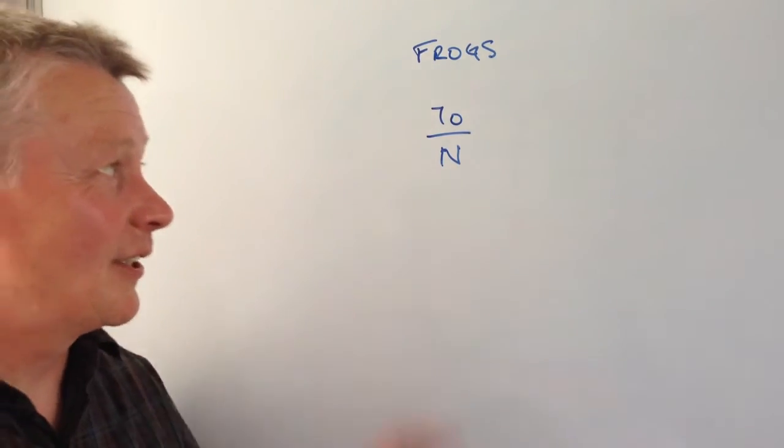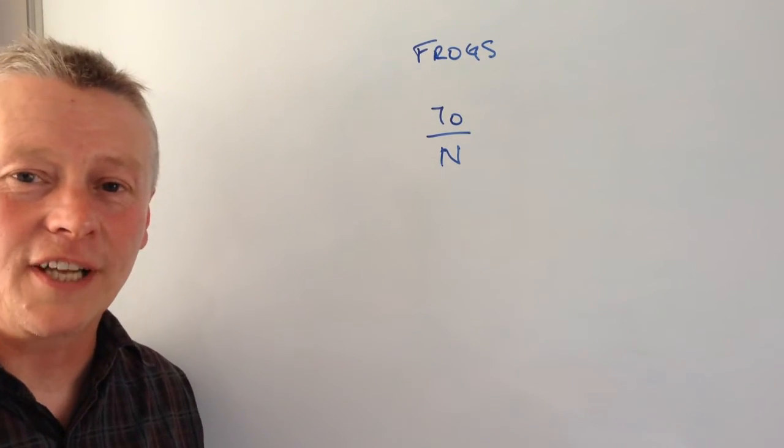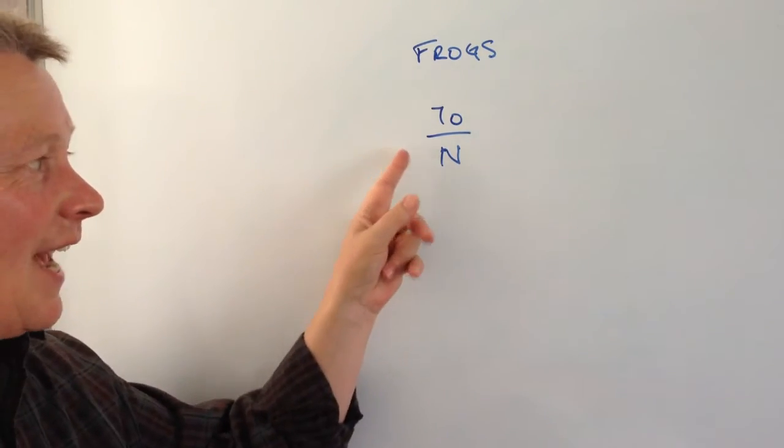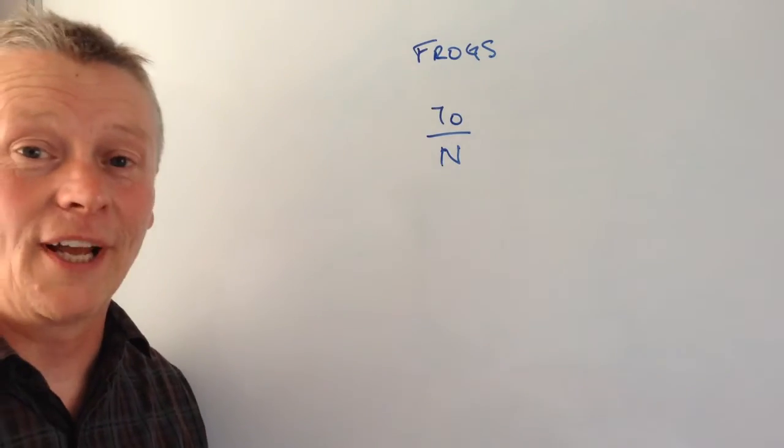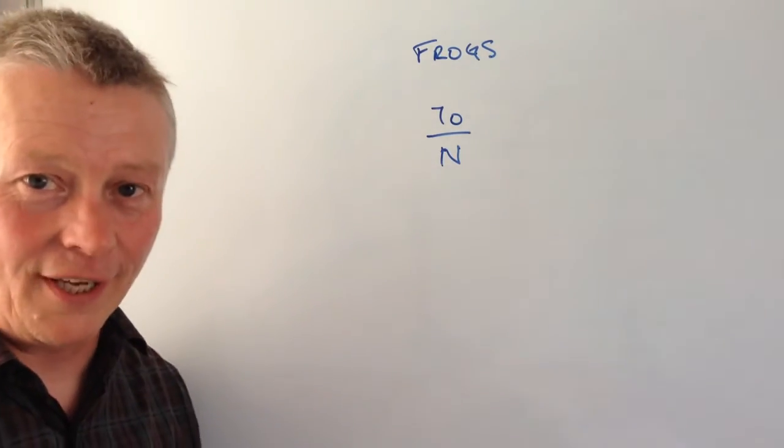Okay, in this particular question this lady goes out, she captures 70 out of the total population of frogs, so this N means total population.